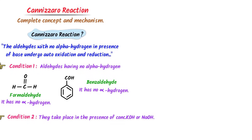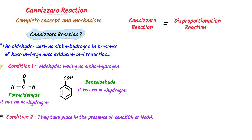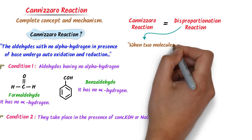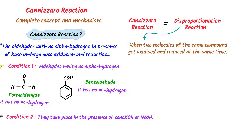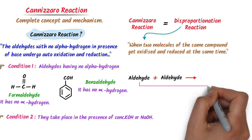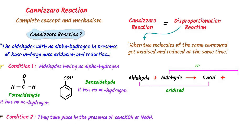All Cannizzaro reactions are disproportionation reactions. What are disproportionation reactions? When two molecules of the same compound get oxidized and reduced at the same time, it is called a disproportionation reaction. For example, consider two molecules of aldehyde — one molecule gets oxidized to form carboxylic acid and another molecule gets reduced to form alcohol.